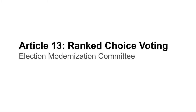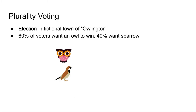The committee identified some deficiencies with the voting system we use in town today, called plurality voting. To illustrate a key defect, let's look at a fictional election in the town of Owlington, a town comprised mostly of owls. Owlington has an upcoming election for an open seat. Roughly 60% of the voters would like to see an owl win, and 40% would like to see a sparrow. There are two candidates in the race, one owl and one sparrow.